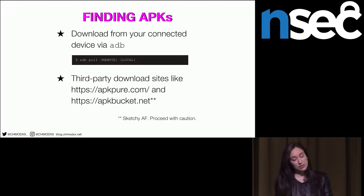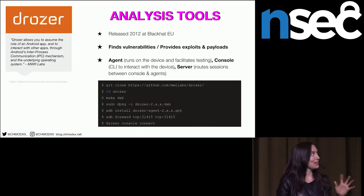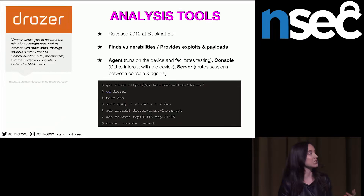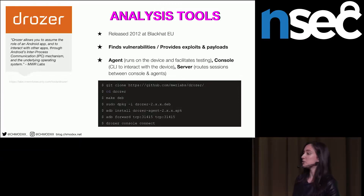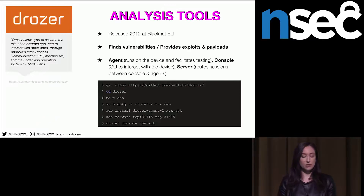Drozer is a really handy application for analyzing and auditing apps. It allows you to assume the role of an Android application so you can interact with whatever your app does. You can find which content providers are exported and whether there are SQL injection vulnerabilities. It's dual purpose — it helps you find vulnerabilities but also provides exploits and payloads. Drozer has three components: an agent (a lightweight Android app), a console for running commands, and a server routing sessions between the console and agents.